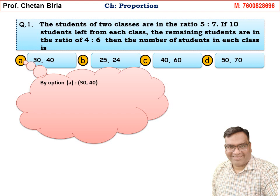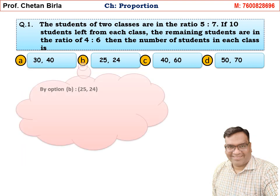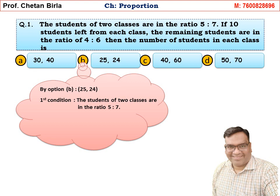Going through Option A: 30 and 40. The first condition is that the students of 2 classes are in the ratio 5 is to 7. The ratio of 30 and 40 is 3 is to 4, which is not equal to 5 is to 7. So Option A is not correct. Moving towards Option B — Option B is also not the correct option.